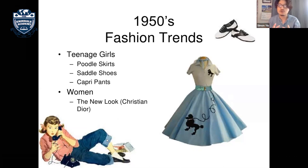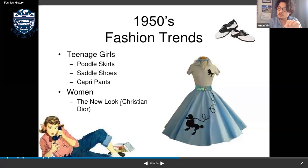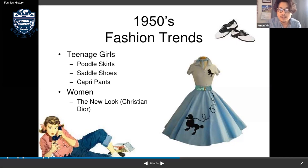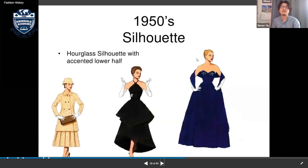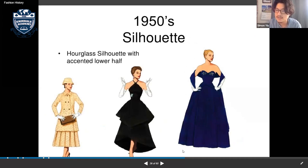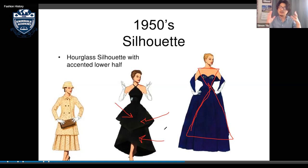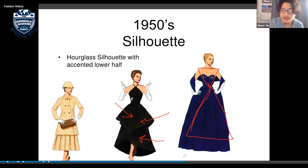An important development for women in the 1950s was Christian Dior's New Look, which changed women's fashion significantly — including the little black dress. The 1950s silhouette was an hourglass with an extended lower half — still hourglass-shaped but with the lower half featuring layers or an extended flare.